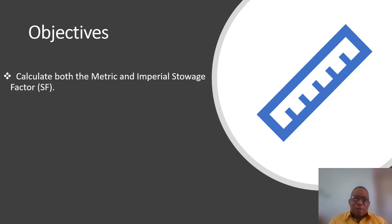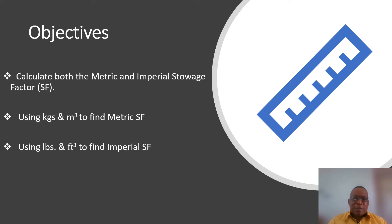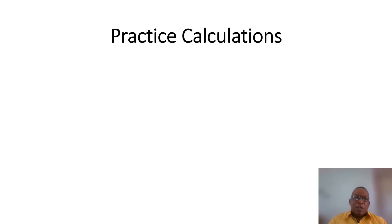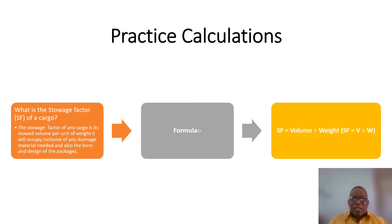We'll be looking at examples to calculate both the metric and imperial storage factor — using kilograms and cubic meters to find the metric storage factor, and using pounds and cubic feet to find the imperial storage factor. The storage factor of any cargo is its stored volume per unit weight it occupies, inclusive of all dunnage material needed and the form and design of the packages. The formula is: storage factor equals volume divided by weight, or SF = Volume / Weight.